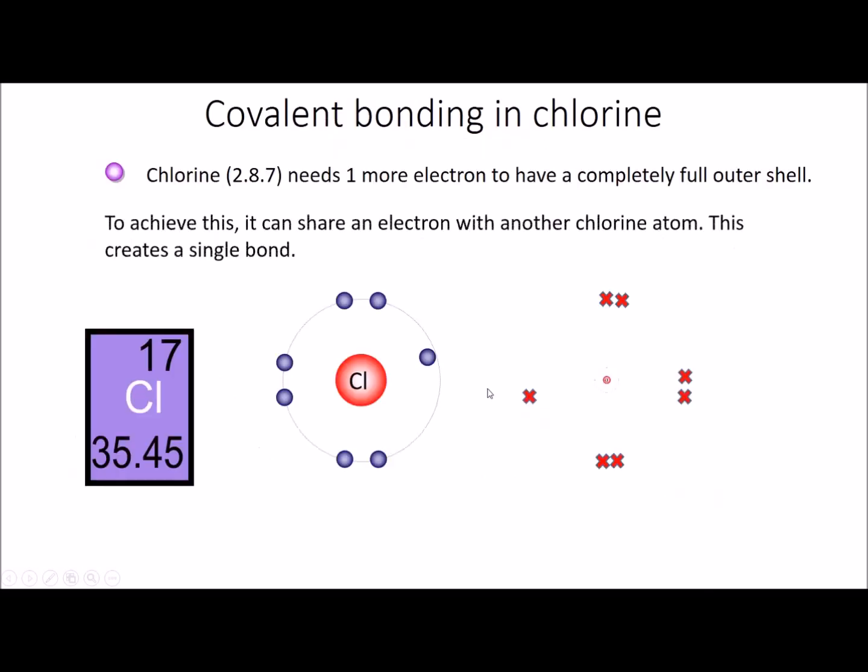So if I was to get two individual atoms of chlorine side by side, you would see that there are seven electrons in the outer shell. Now, when you're drawing dot and cross diagrams, you don't need to show the other shells, you just need to show the outer shell as those electrons are involved in bonding.